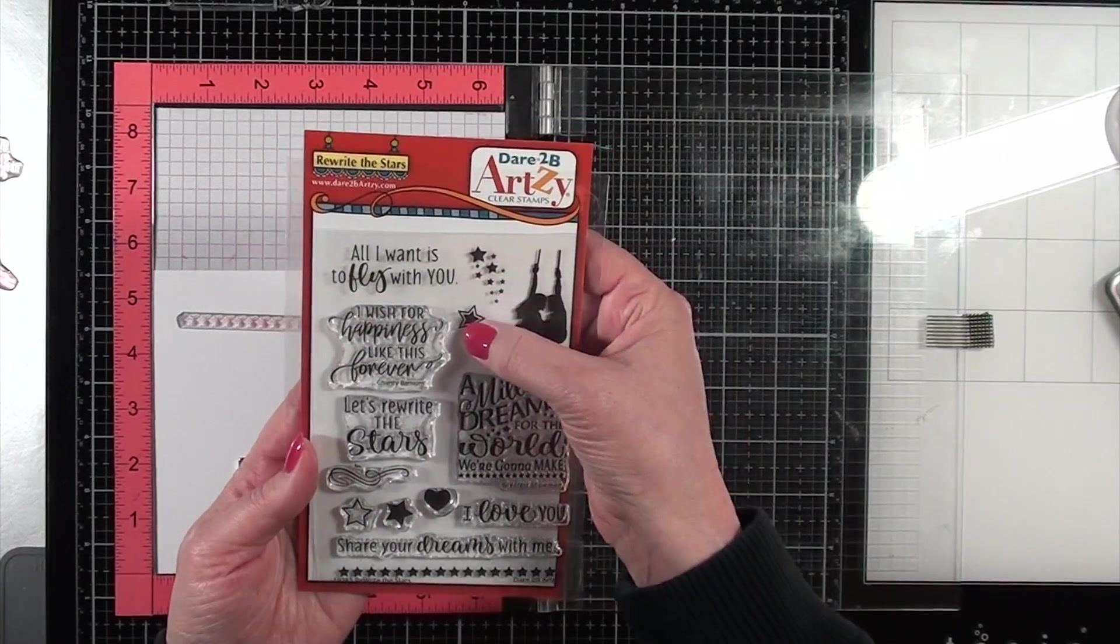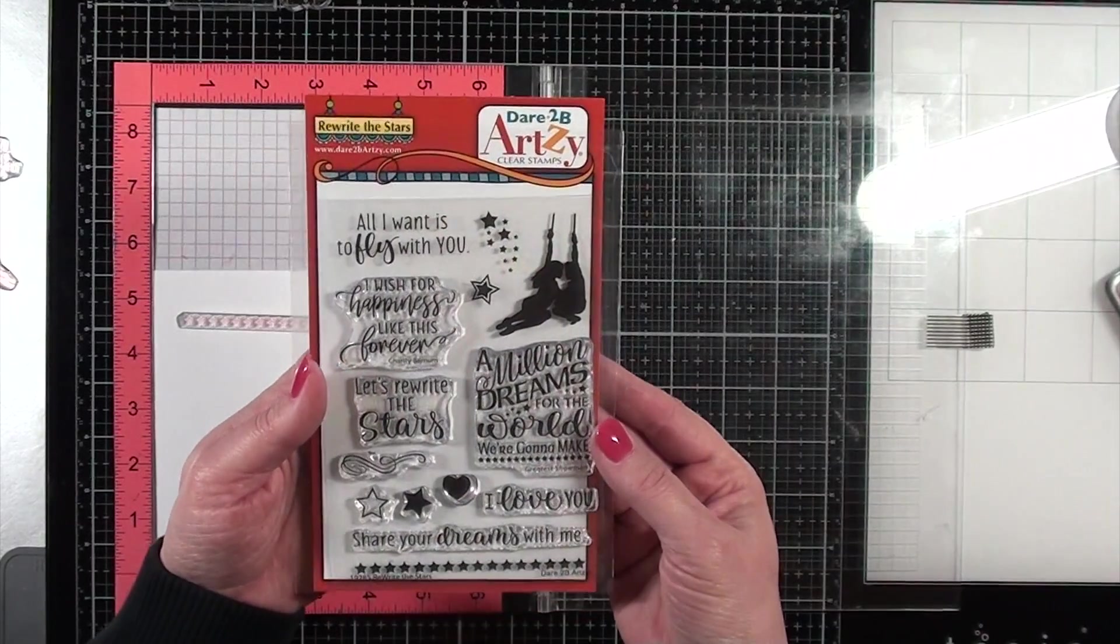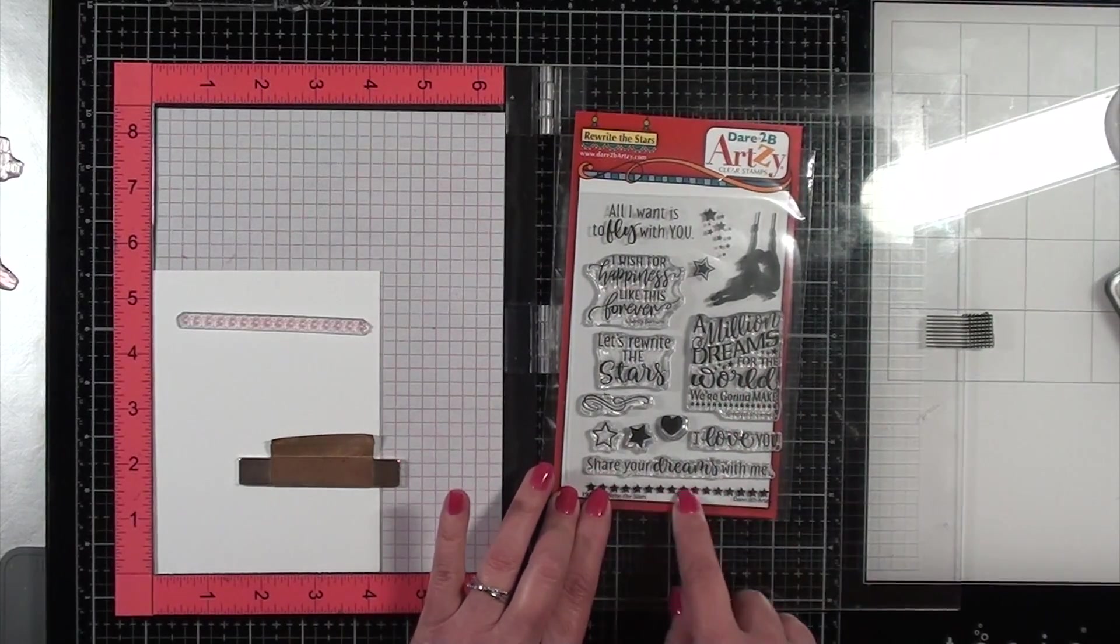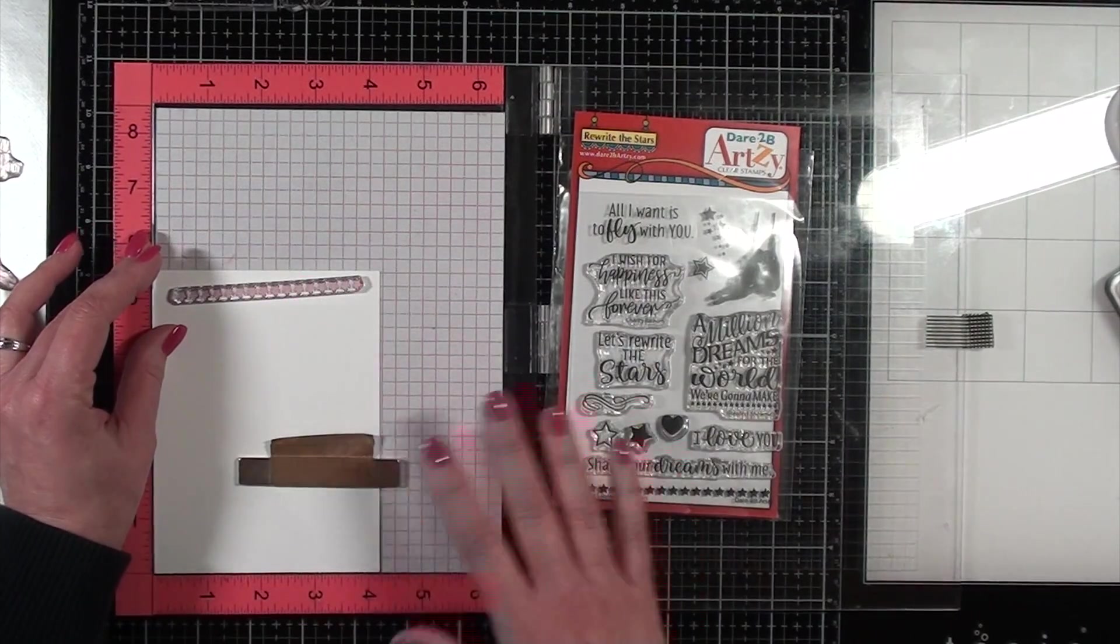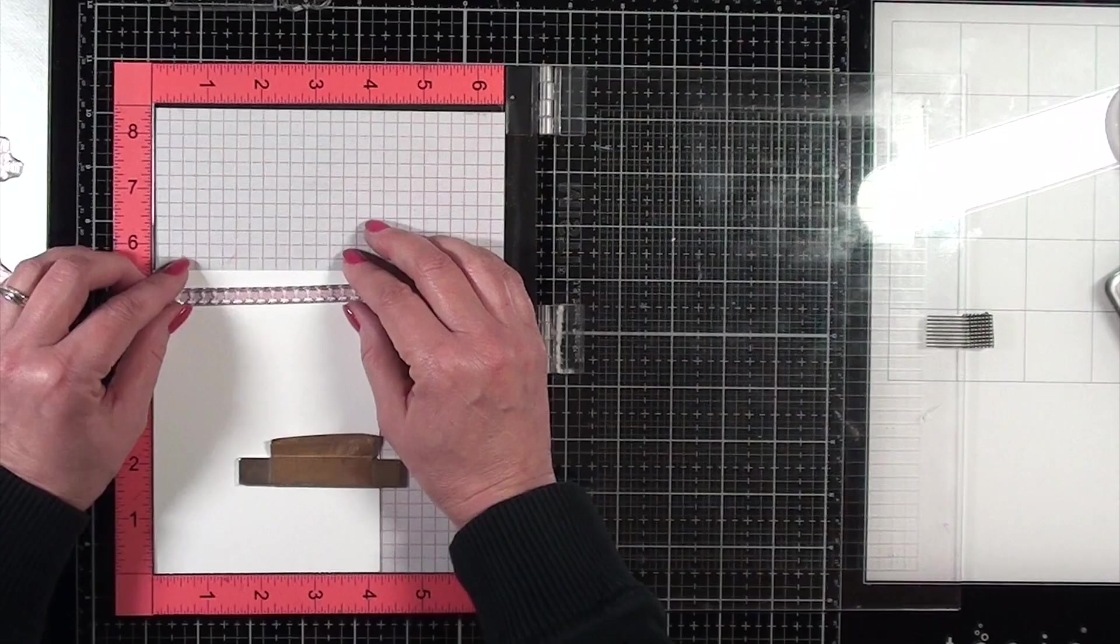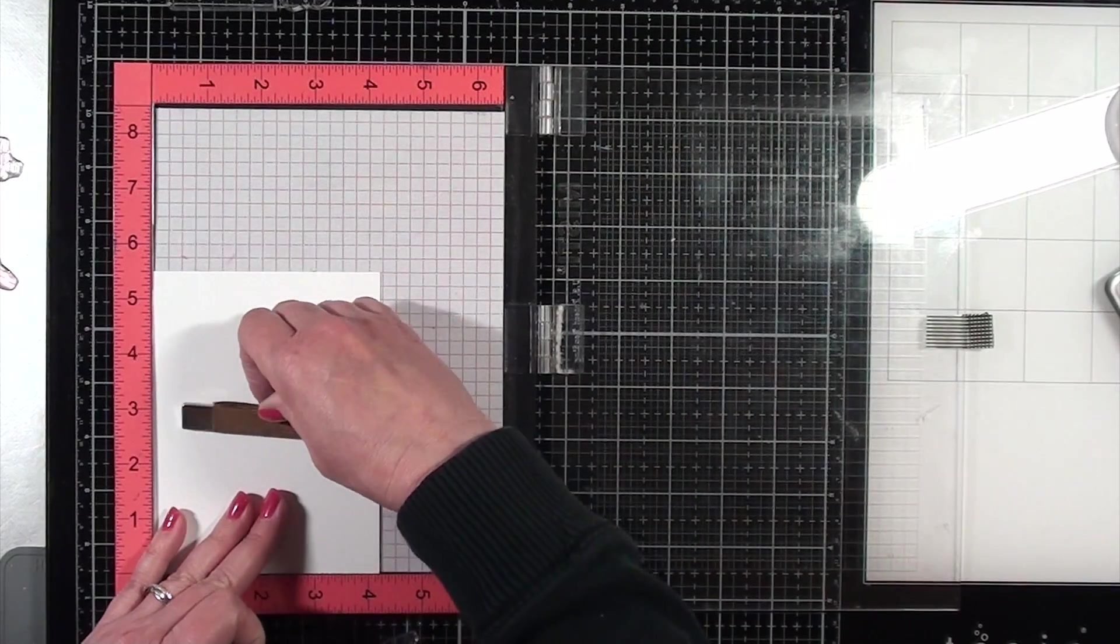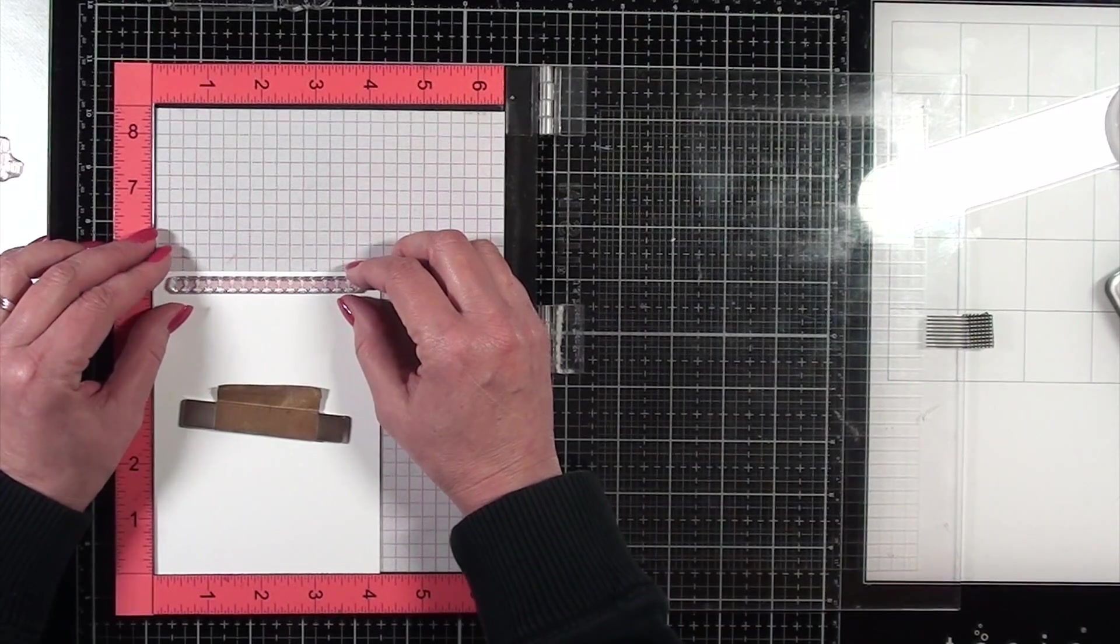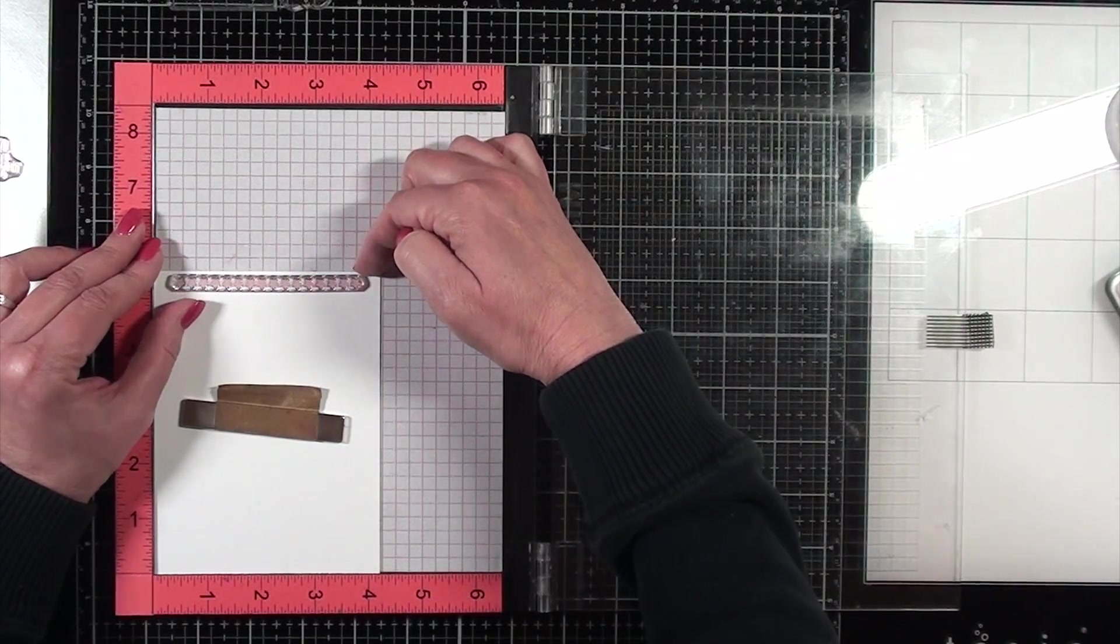So here is the stamp set I will be using today. It's called Rewrite the Stars and it is a new release from Dare to Be Artsy. I'm going to be using a few different stamps out of this set to create the card today, including this little line of stars stamp. The first thing I need to do is set it up in my MISTI because I intend to stamp several rows of this stamp in two different colors. I'm starting with a piece of five and a half by four and a quarter inch Neenah Solar white paper. Now I'm aligning the stamp with all the stars at the very top, making sure it's parallel to the top of the paper.